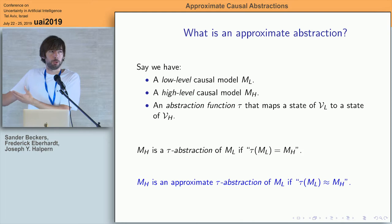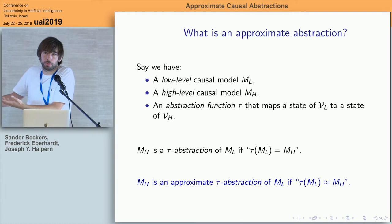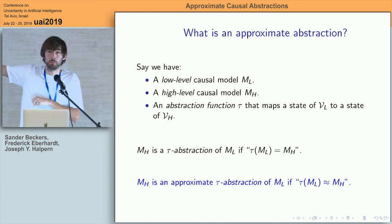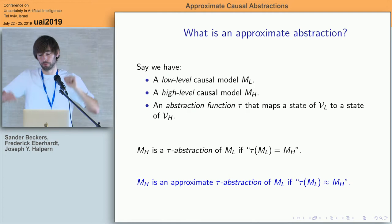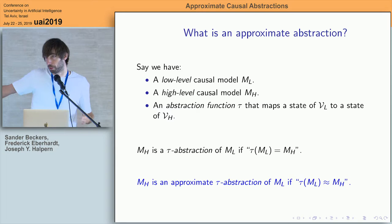If you see that as the challenge of defining an exact abstraction, then the challenge of defining an approximate abstraction is, rather than requiring an identity between the abstracted model and the high-level model, requiring only an approximation between the two. The paper tries to flesh out how that approximation should be quantified precisely.